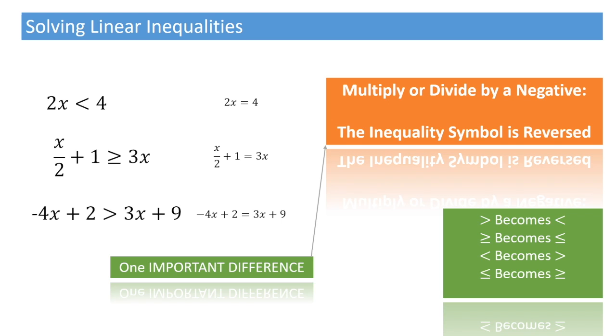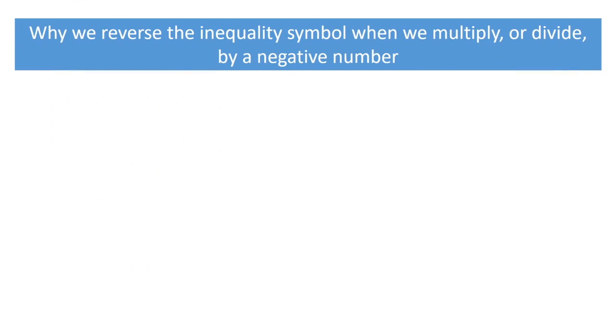Now, let's see why that is. Here's why we have to reverse the inequality symbol when we multiply or divide by a negative. Consider the inequality 5 greater than 2. We can illustrate this on the number line as follows. We have 5 right here, and 2 right here. And what the inequality 5 greater than 2 is actually telling us is that, starting from 0, 5 is further to the right than 2 is, as illustrated here.